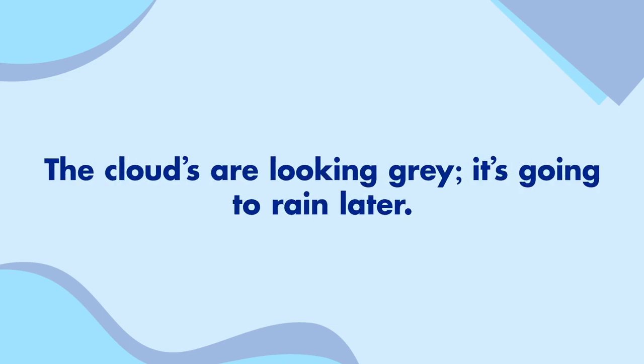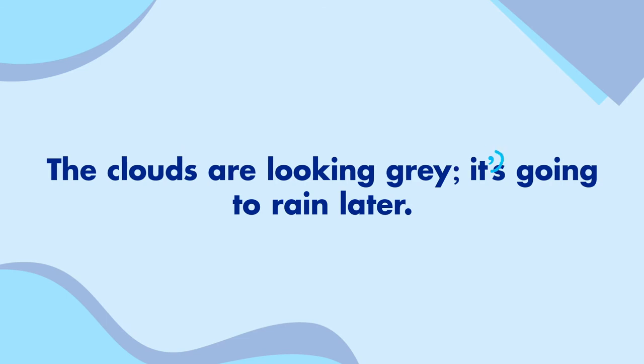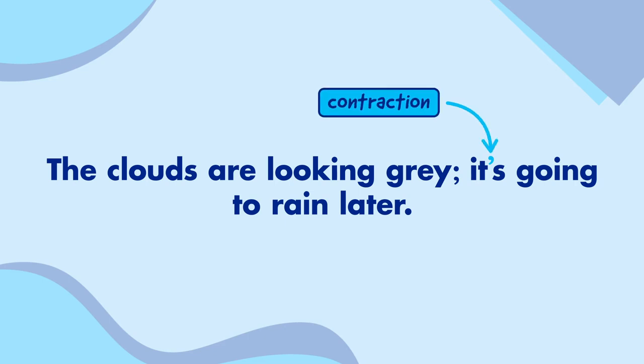Now let's look at another sentence. 'The cloud's are looking grey. It's going to rain later.' Okay, so I can see two apostrophes again. The first one is in the plural word 'clouds'. It's not a contraction, and although something could belong to a cloud, that's not shown in this sentence. That means the first apostrophe is wrong. The second apostrophe is in the word 'it's', which is a contraction of the phrase 'it is'. That means that the apostrophe here is correct.